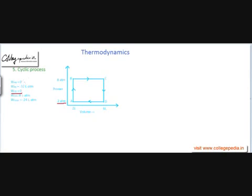If we add all the work: 0 + (−32) + 0 + (+8) = −24 liter-atmosphere. The net work done is negative, meaning the system has done work overall. In part of the process work was done on the system, and in part work was done by the system, but overall the system has done work when it completes the cycle from A back to A.